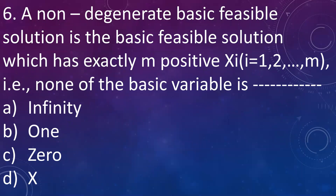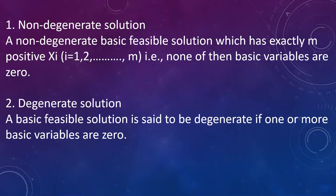Next question: a non-degenerate basic feasible solution is the basic feasible solution which has exactly m positive xi, i = 1 to n. That is, none of the basic variables is: A. Infinity, B. 1, C. 0, D. X. In case of non-degenerate basic feasible solution, basic variables will not be equal to 0 — they are non-zero. In case of a degenerate basic feasible solution, one or more basic variables are 0; and in the non-degenerate case, none of the basic variables are equal to 0.